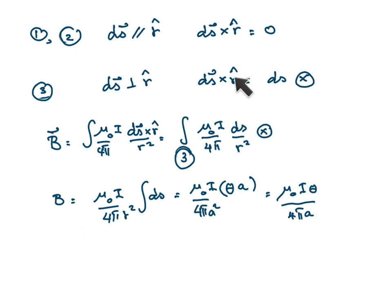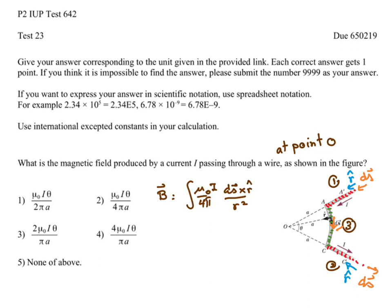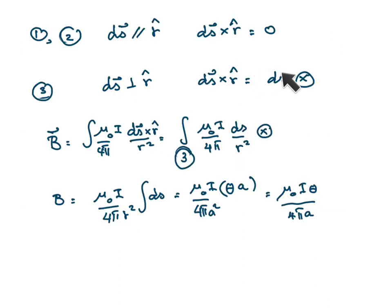When two vectors are perpendicular, the magnitude of their cross product equals the product of the magnitudes of each vector. Since r-hat is a unit vector, its magnitude is one, so the magnitude of ds cross r-hat is simply ds. Using the right-hand rule, pointing your fingers in the direction of ds with r-hat pointing out of your palm, you find that ds cross r-hat points into the plane.